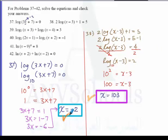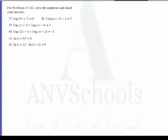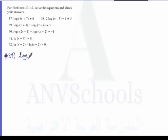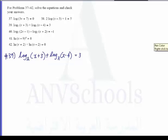Now we move on to number 39. Log base 2 of x plus 3, plus log base 2 of x minus 4, is equal to 3. Note that they are of the same base. Using the product rule for logarithms, we combine the two terms: log base 2 of the product of x plus 3 times x minus 4 is equal to 3.